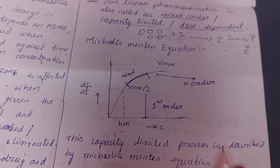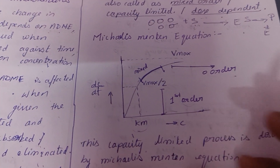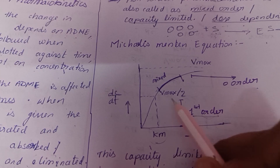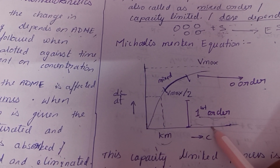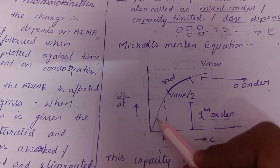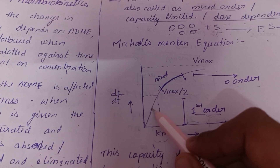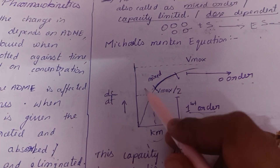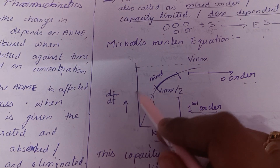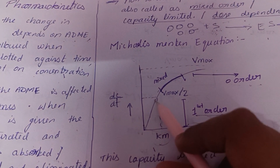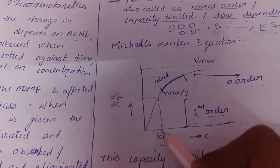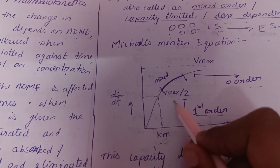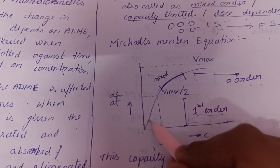Next we can see the Michaelis-Menten equation. In this graph, where is mixed order? When it is linear, it follows first order — concentration-dependent, so as concentration increases, the rate of absorption and distribution increases. When it is at a constant level, that is zero-order kinetics. In this graph, we see Vmax at the top. Vmax divided by 2 corresponds to Km — Km is the concentration required to attain Vmax by 2. The first-order region is the lower curve, and the mixed-order curve combines both regions.